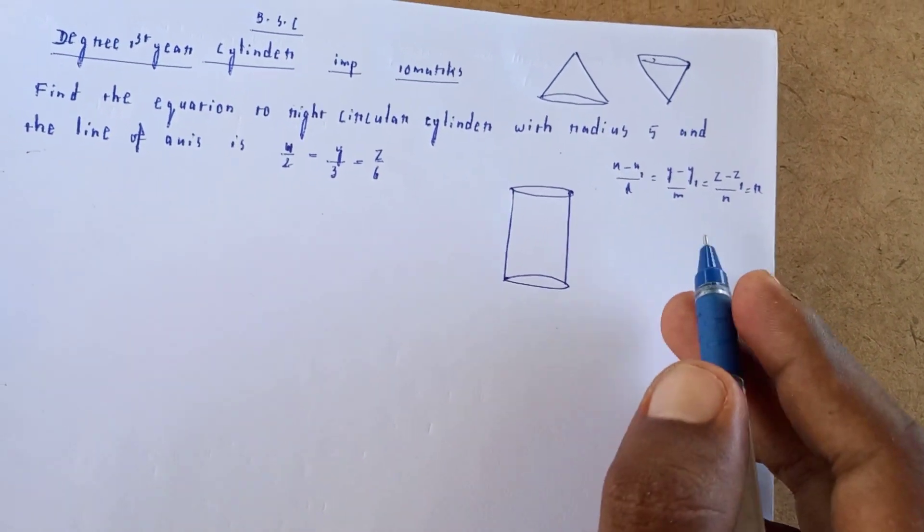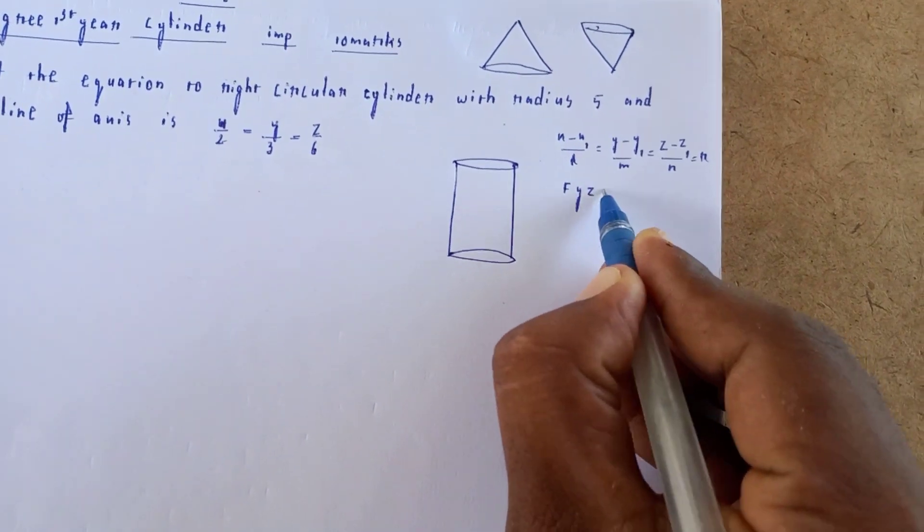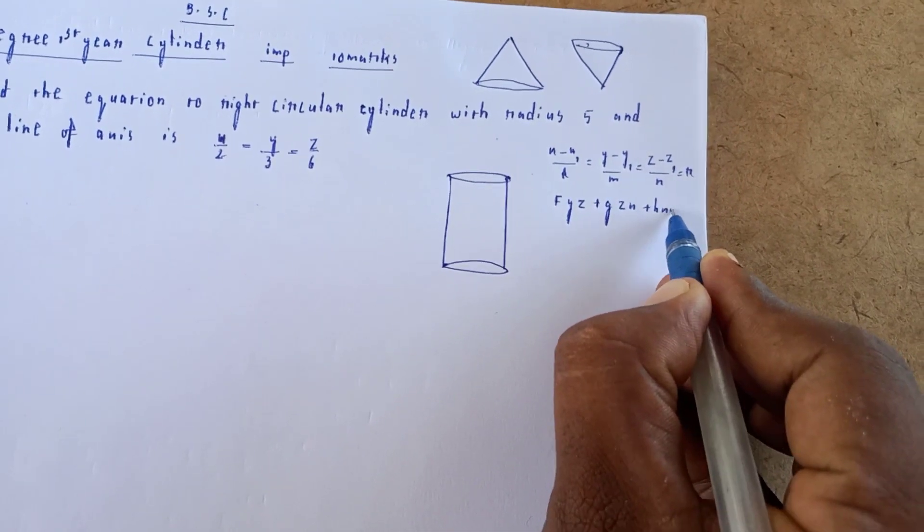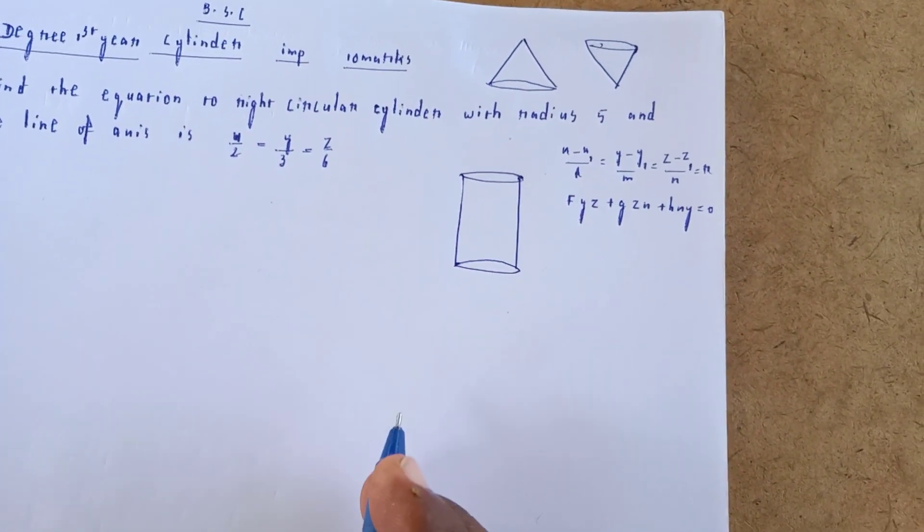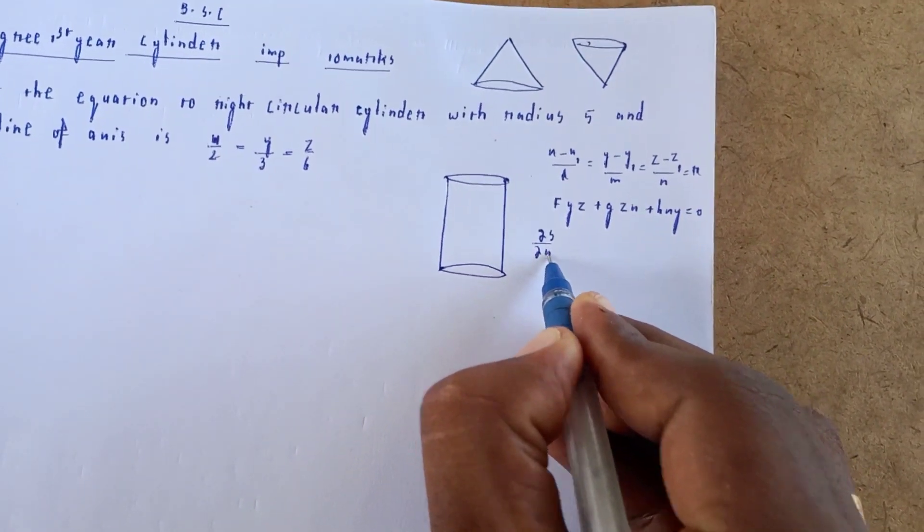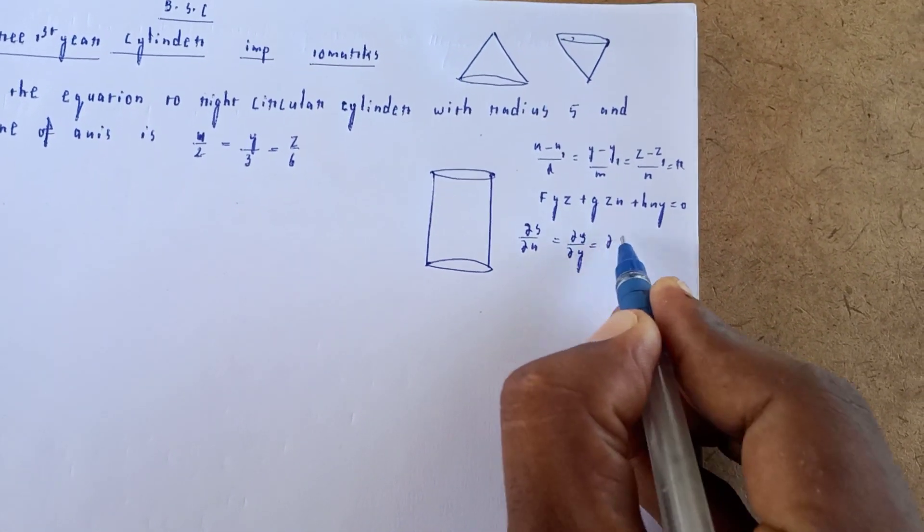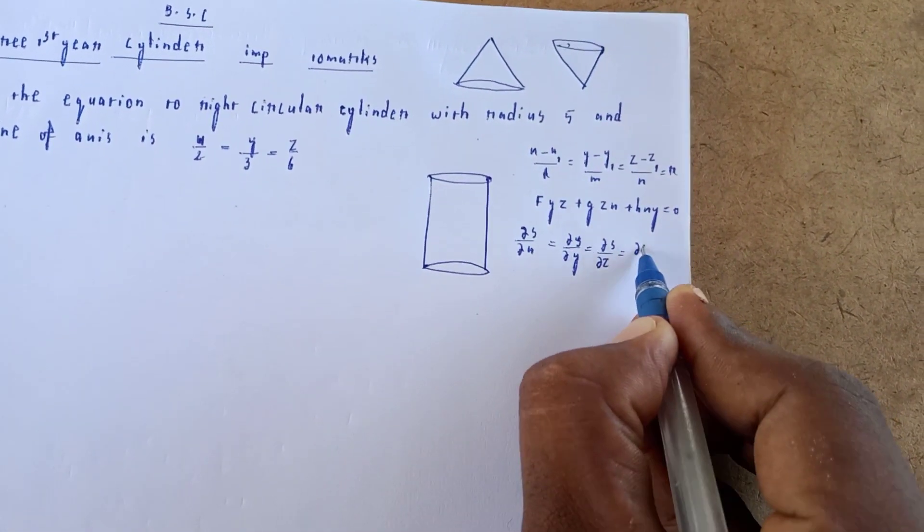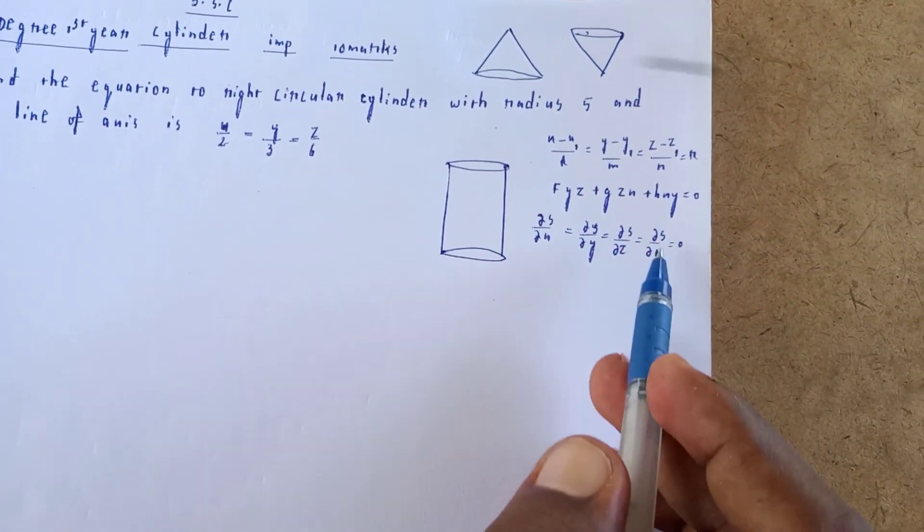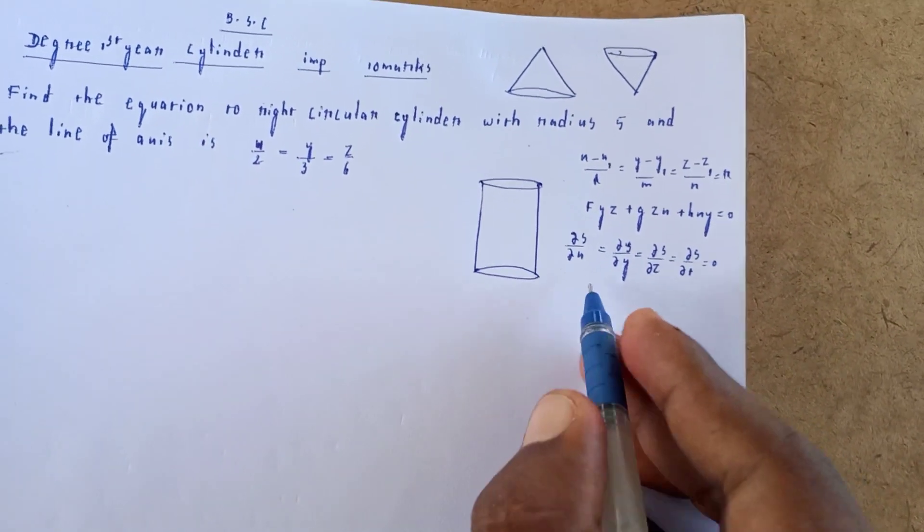Next, ∂S/∂x = ∂S/∂y = ∂S/∂z = ∂S/∂t for cone equations.